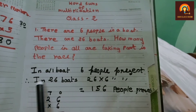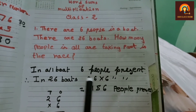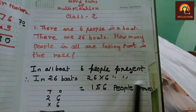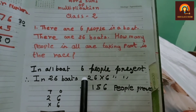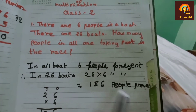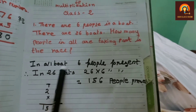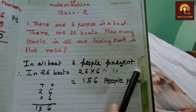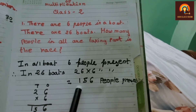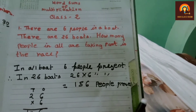In 26 boats, 26 into 6 people are present. In 26 boats, 26 into 6 people are present. How many people are present? In 26 boats, 156 people are present.